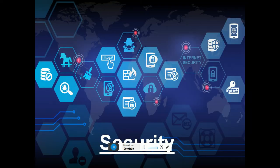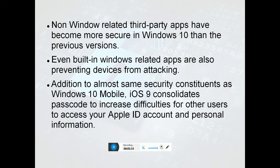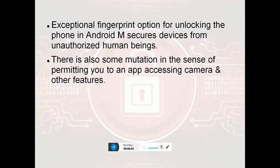Security. There are different security levels in these operating systems: internet security, mobile security, data encrypted security, and online banking security. Windows 10 third-party apps have become more secure, and built-in Windows apps are also preventing attacks. iOS 9 has a consolidated passcode, increasing difficulty for other users to access your Apple ID and personal information. Android M secures devices from unauthorized access using fingerprint recognition, and also offers granular app permissions for cameras and other mobile features.